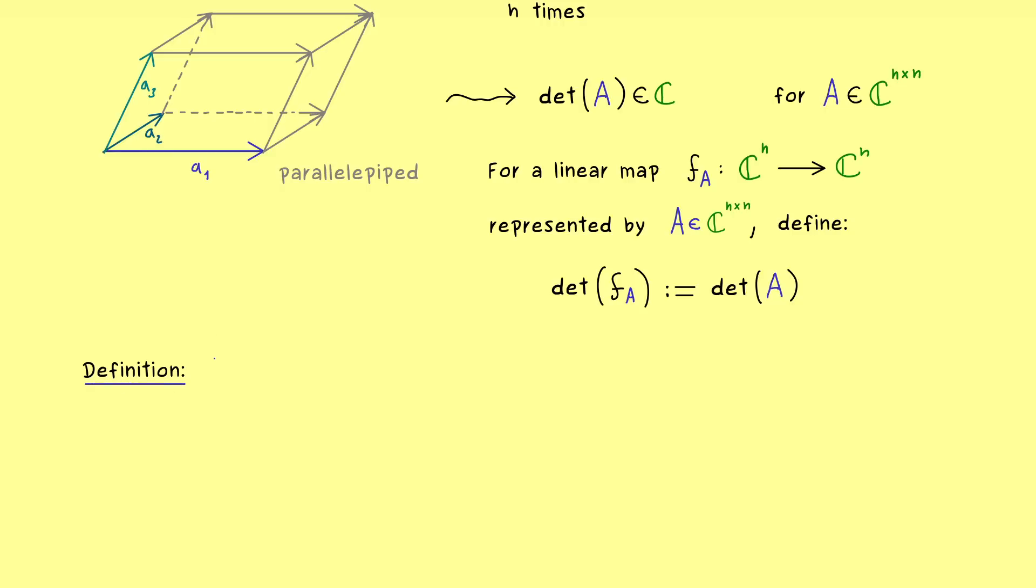So the assumptions are, that we have an F vector space V and a linear map L from V into itself. And as always, we also assume that we have a finite dimensional vector space, where we can choose a basis with n elements. Now this is really important, because we want to have a matrix representation of L.